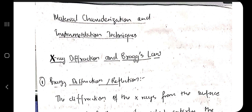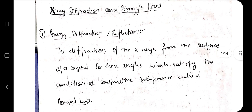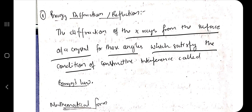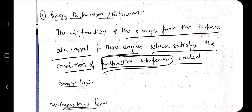Moving on, we have different instrumentation techniques — mainly five to six techniques you need to know. The first one is X-ray diffraction and Bragg's law. Diffraction of X-rays from the surface of a crystal for those angles which satisfy the condition of constructive interference — that is known as Bragg's law.